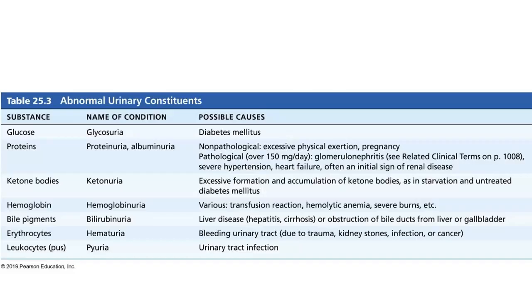Here's a table of what should not be in urine. Glucose, because we regulate that hormonally, should not spill over into the urine. Whole proteins shouldn't even get filtered, so whole proteins should not be present. We might see amino acids, but not whole proteins.